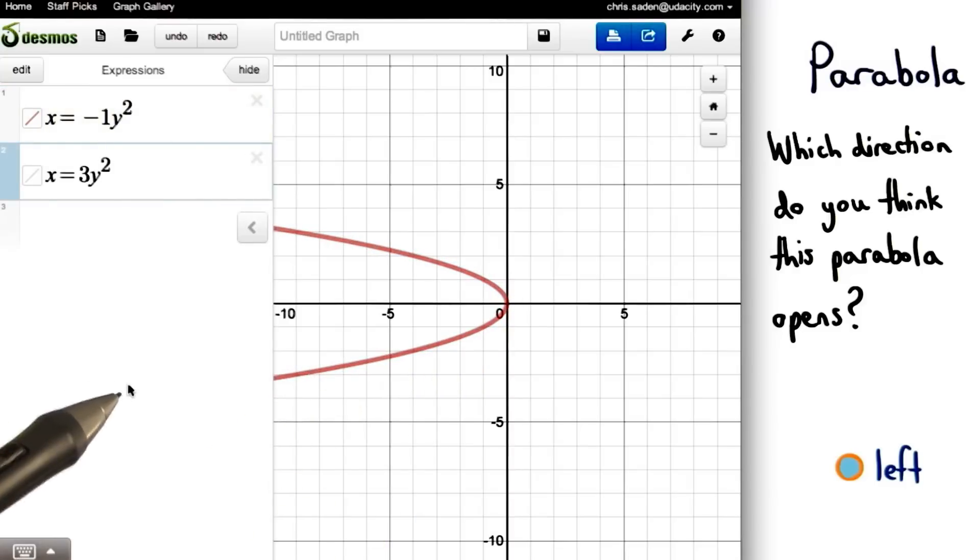If I had a different parabola, like x equals 3y squared, then we can see that that parabola opens to the right since the a value here is positive.